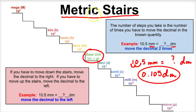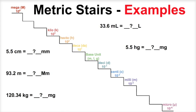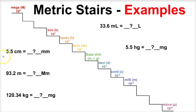So let's use the metric stairs now to solve problems where we're being asked to convert between the different metric prefixes. Let's work some sample problems using the metric stairs. It says we have five and a half centimeters — we want to figure out how many millimeters this is. So centi is right here; that's what we're starting with. The known quantity here is in centimeters, and we want to go to millimeters, which is right here.